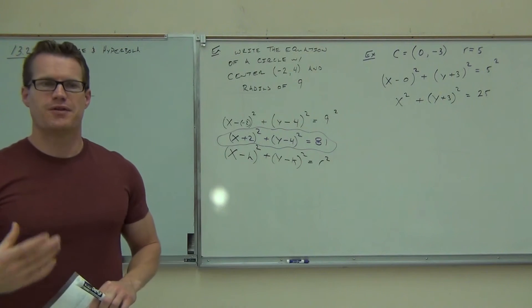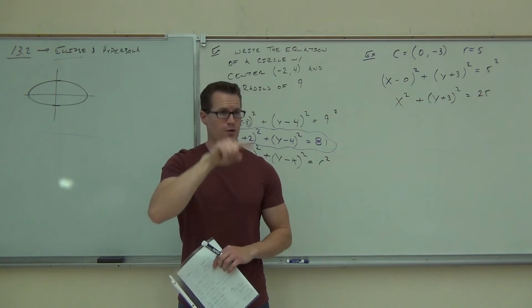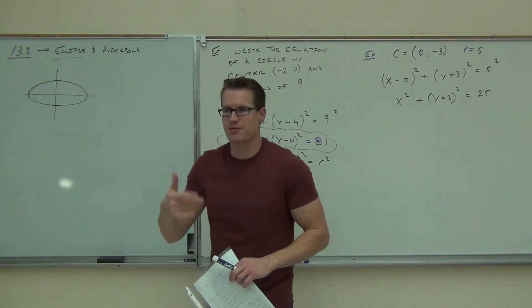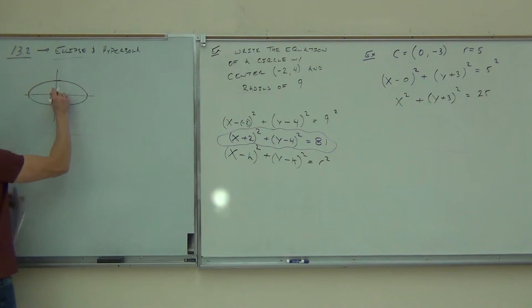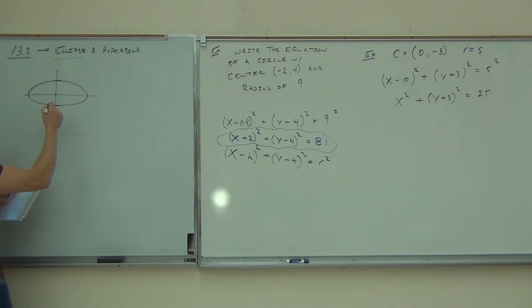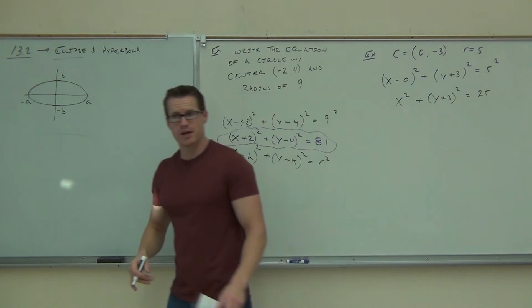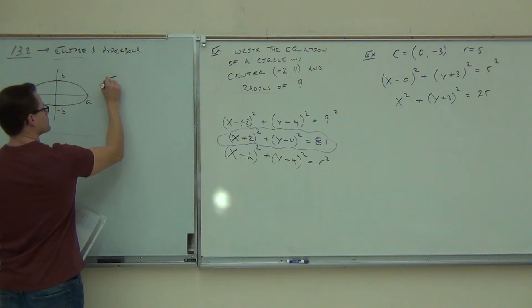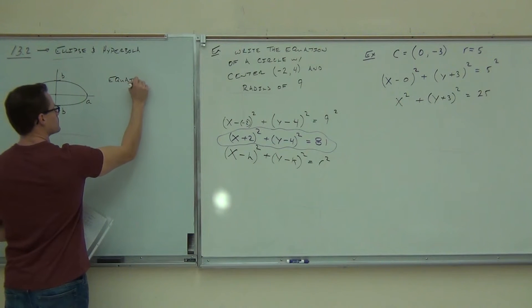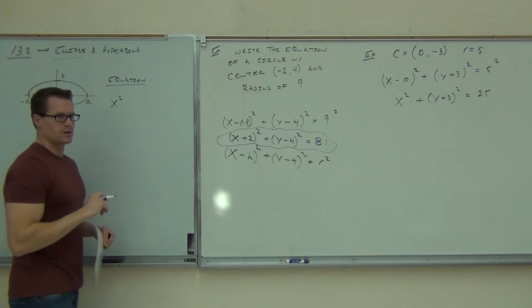Now, we have a couple letters to signify where this crosses the x and the y. You see, with circles, we cross at, if it's centered at 0,0, the same number at all four points, right? Because it's a circle. It goes out the same distance in every direction. Ellipses don't. If our ellipse is centered at 0,0, we go out a certain direction in y and a certain direction in x. We call these points, according to the x coordinates, a and negative a, b and negative b.